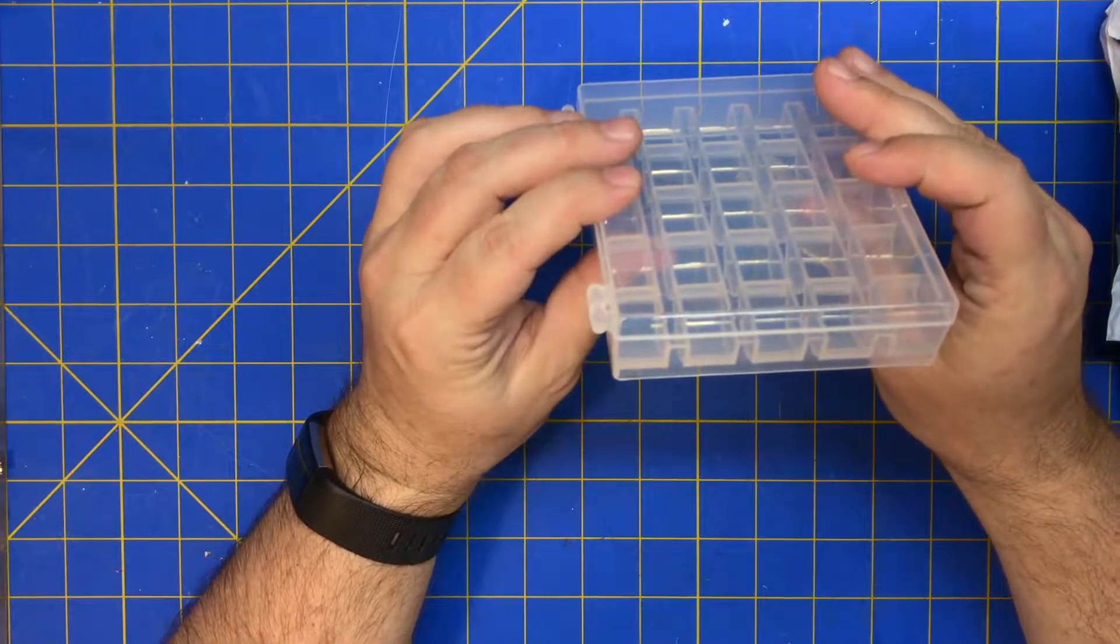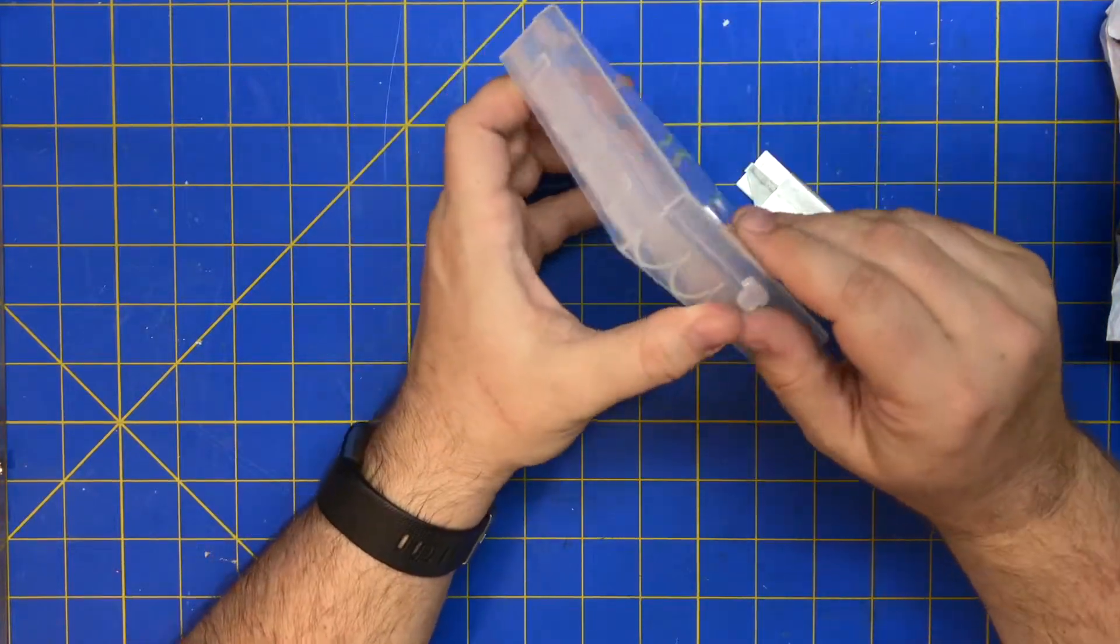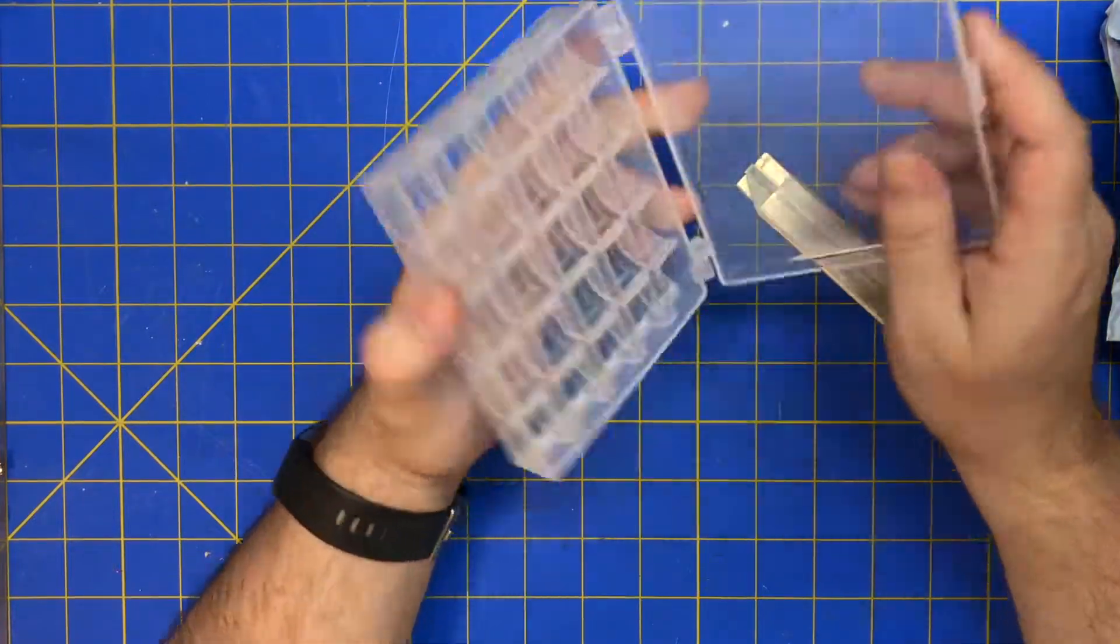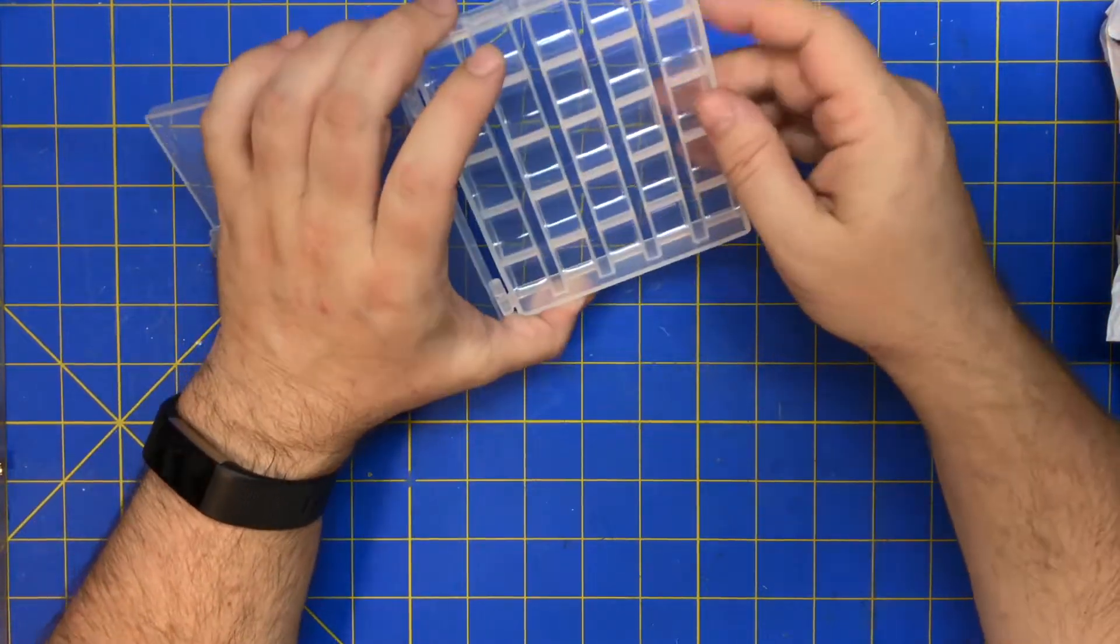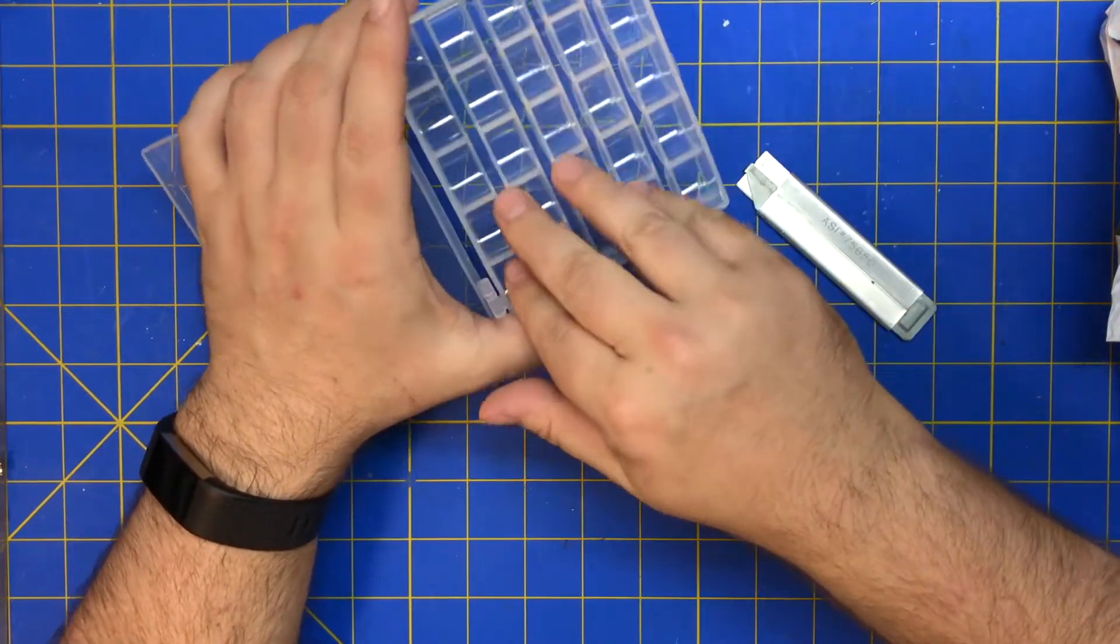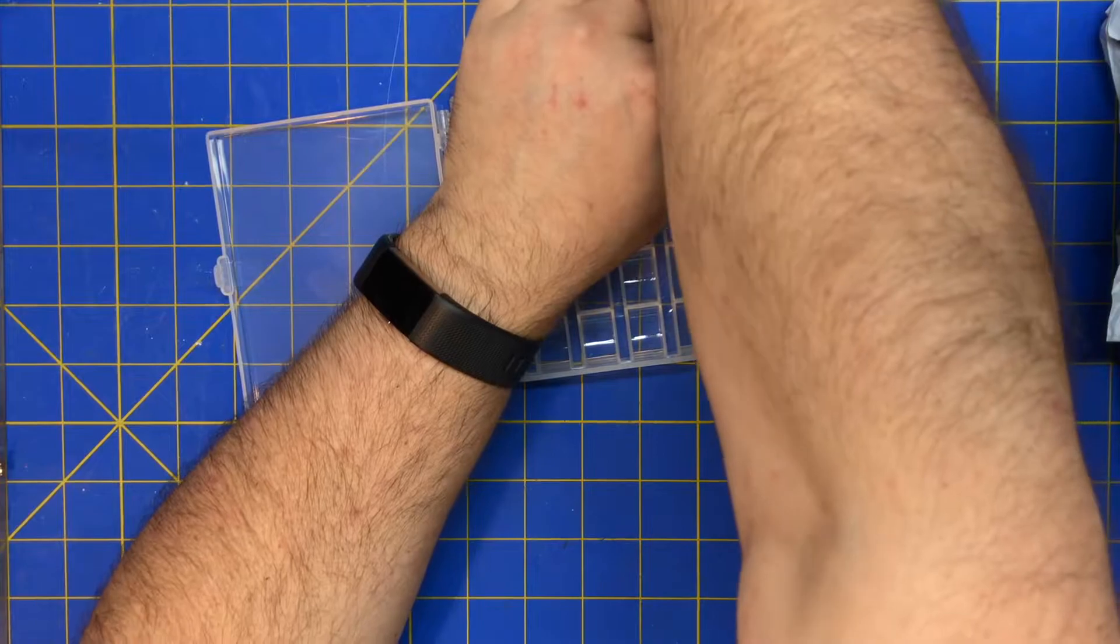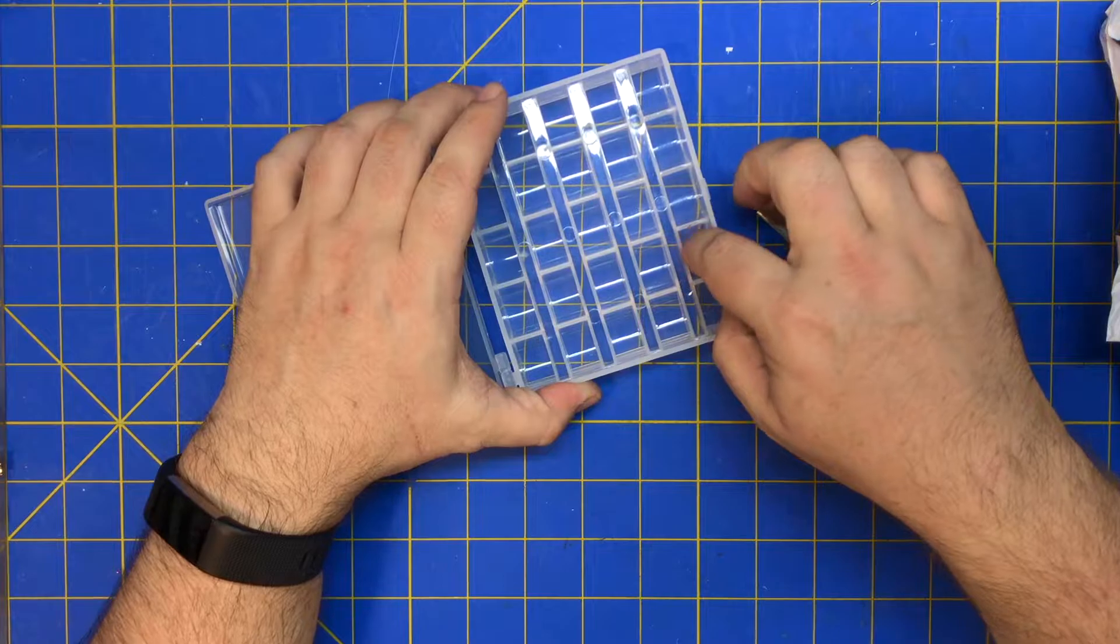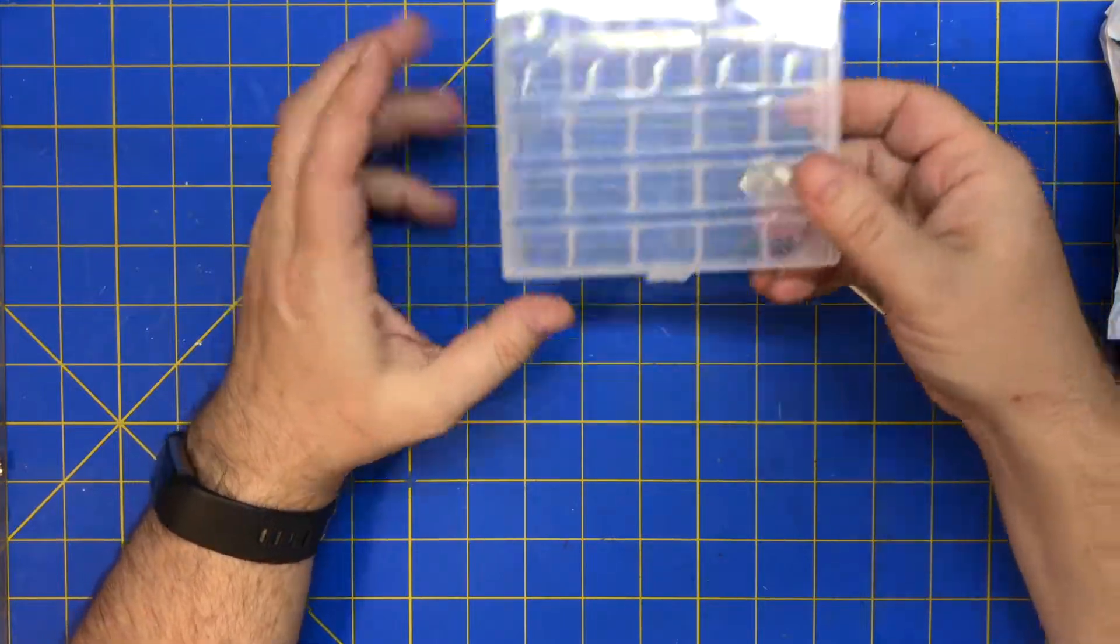This is a bobbin storage for sewing bobbins. The only problem is I didn't realize this didn't close. Only the bottom half is full and there's nothing on top, because it's made for bobbins. But I thought this would be interesting to use for SMD sorting because the bottoms of each piece, there's nowhere for things to fall in between them, which is nice. Sometimes there's a problem with these.